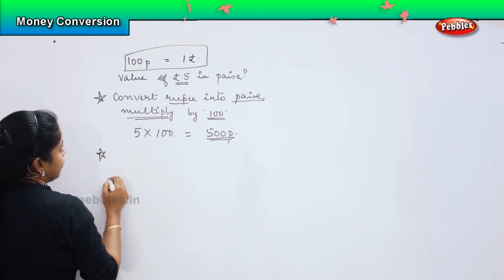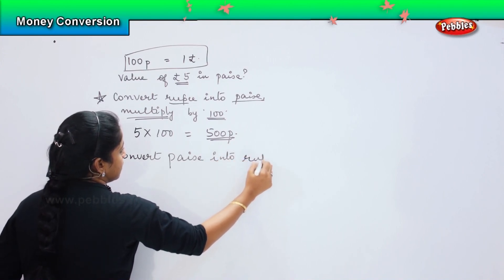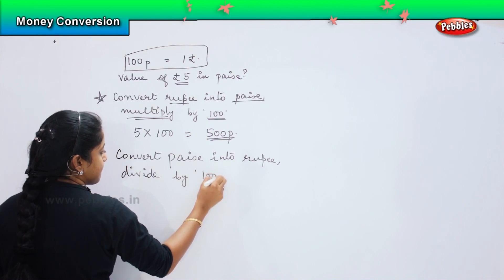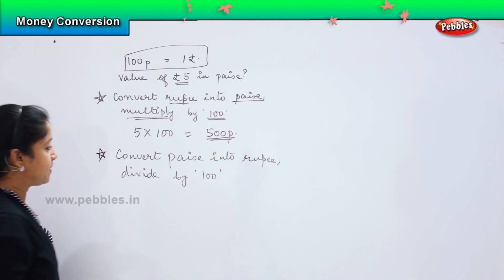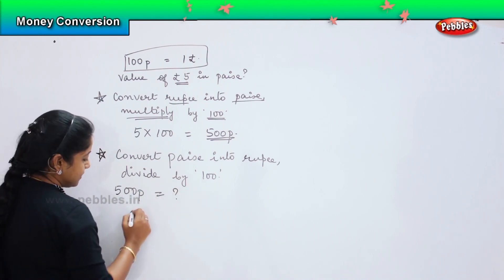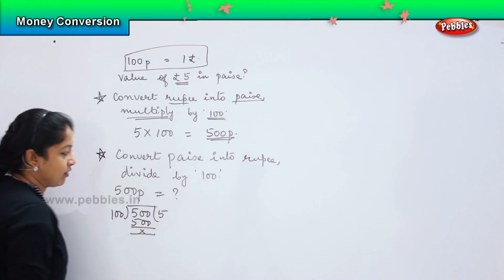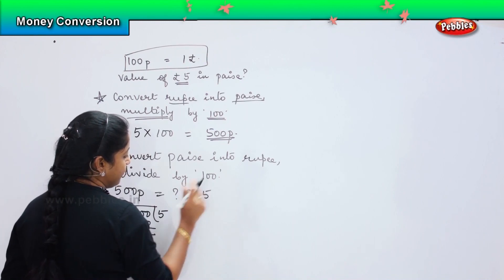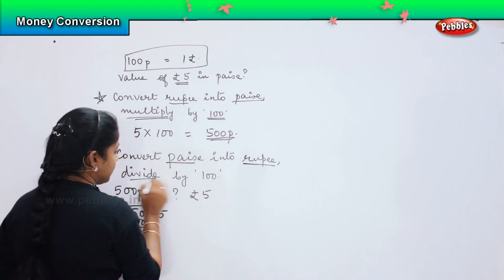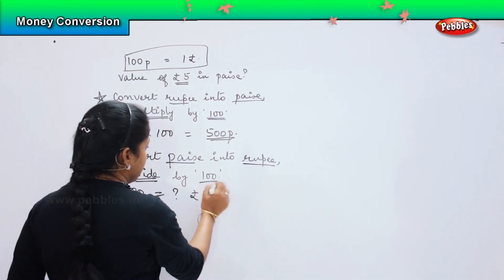The same thing applies in reverse: if I have to convert paise into rupees, I need to divide by 100. So if I have to convert 500 paise into rupee form, I divide 500 by 100, which gives me 5. That means 500 paise equals 5 rupees. So to summarize: to convert paise into rupees, divide; to convert rupees into paise, multiply — and in both cases you do it with 100.